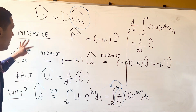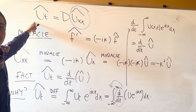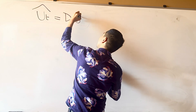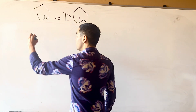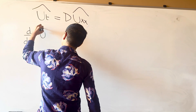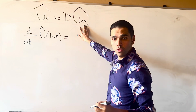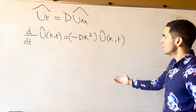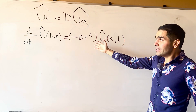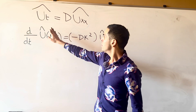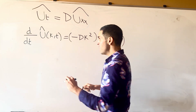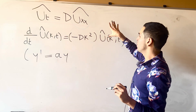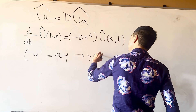Now let's plug in those two facts. We have û_t = d·û_xx, which becomes d/dt û(κ, t) = -dκ²·û(κ, t). This is just a first-order ODE if you ignore κ — very similar to y' = ay, whose solution is ce^(at).